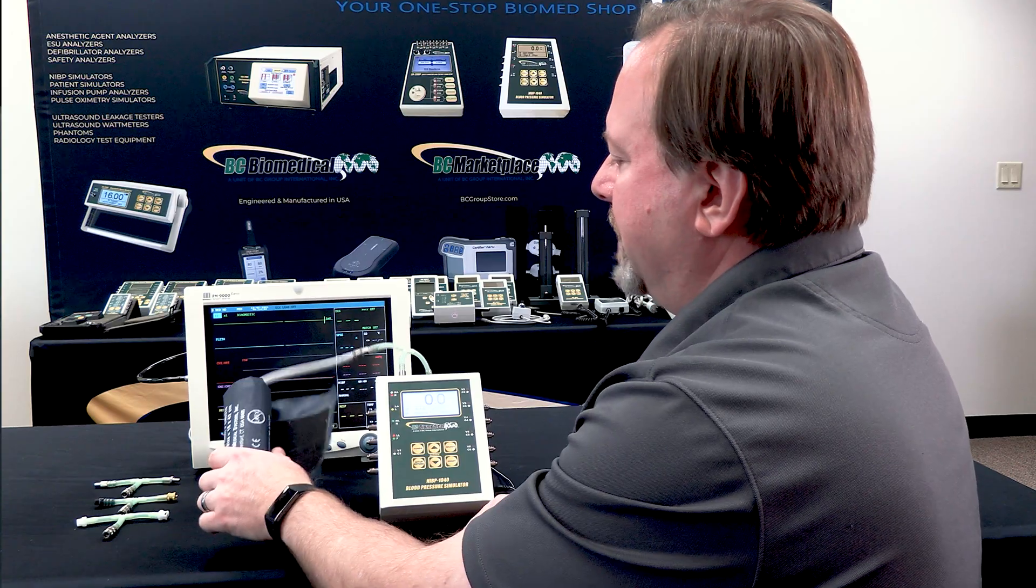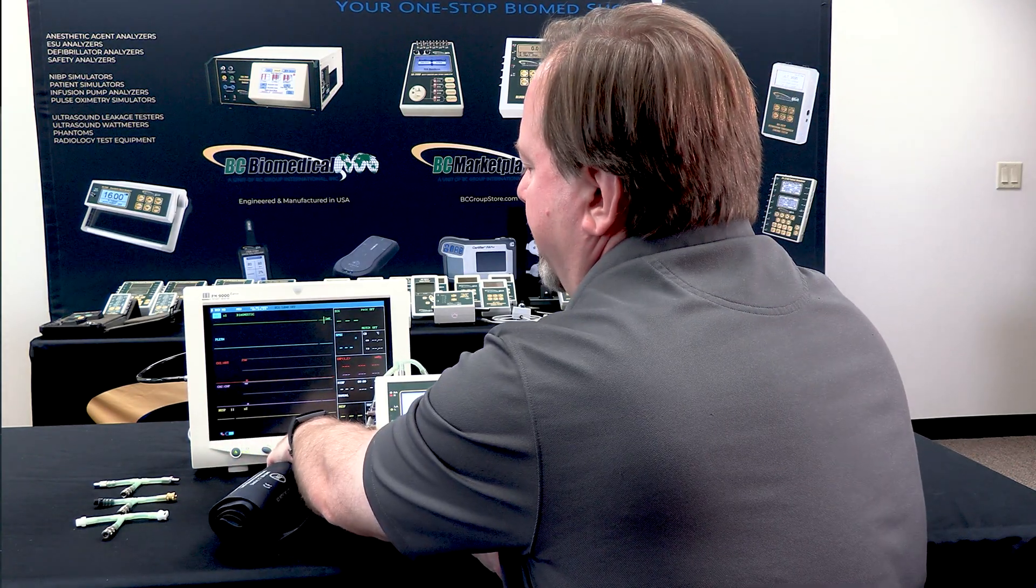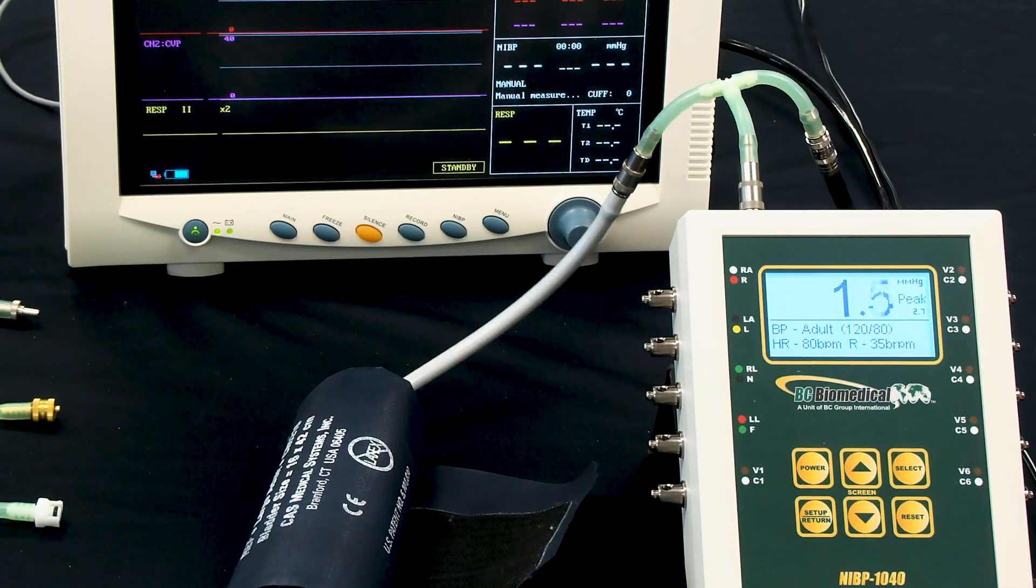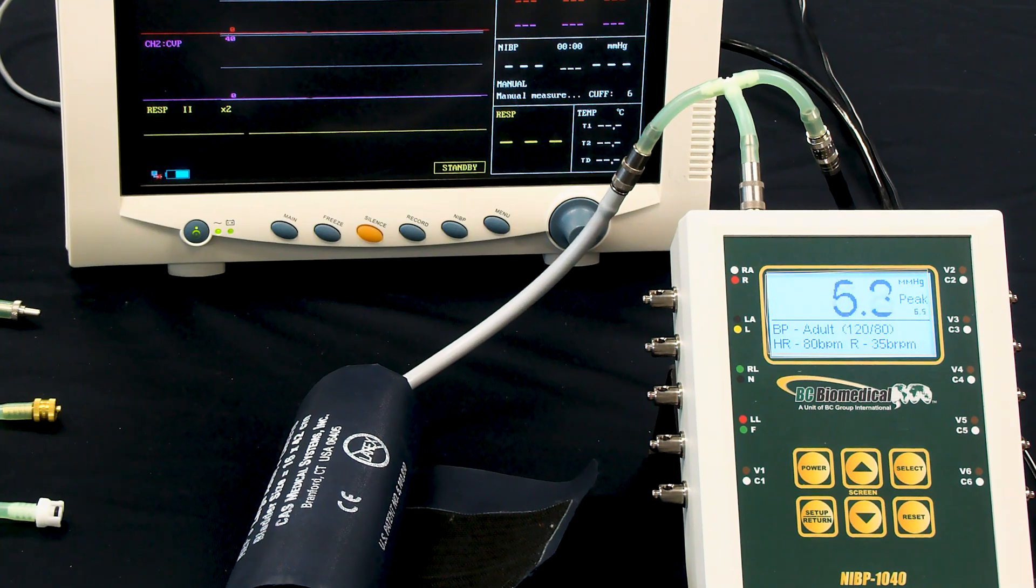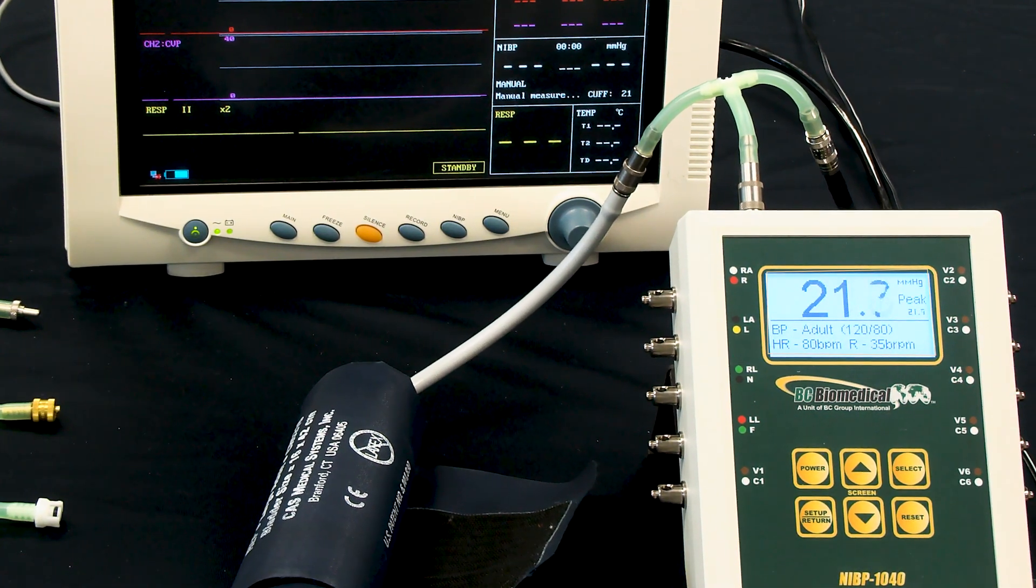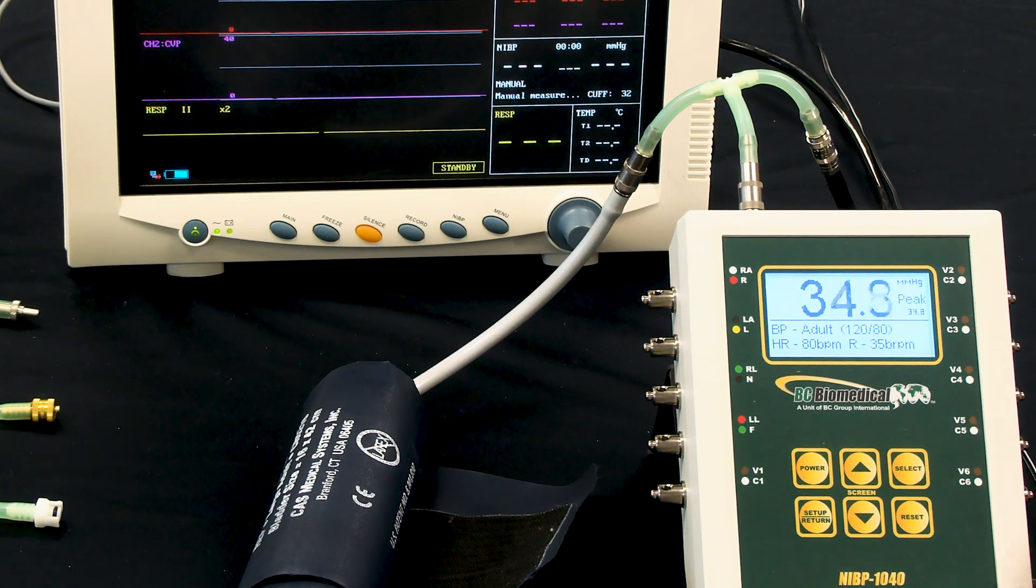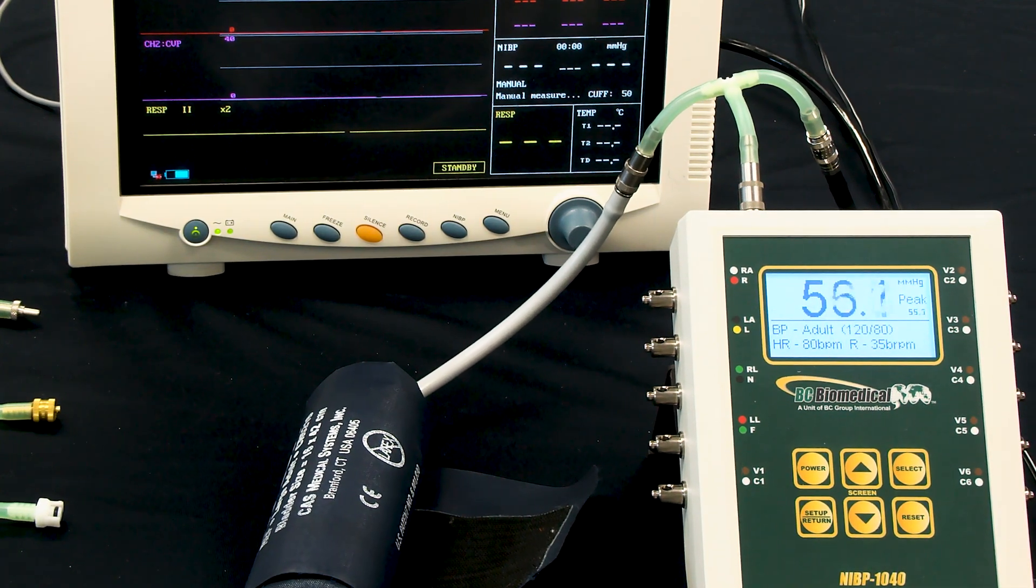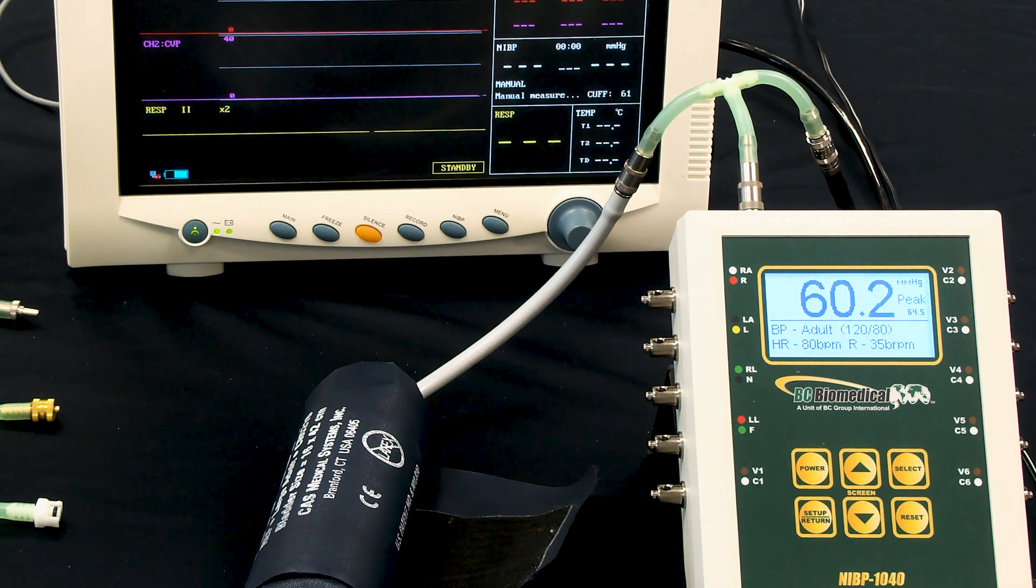So all we have to do is have our T connected and our cuff wrapped, and we'll start the NABP simulation on the monitor. We can see the pressure rising on the screen of the NABP 1040, and it's also monitoring peak pressure during the simulation.